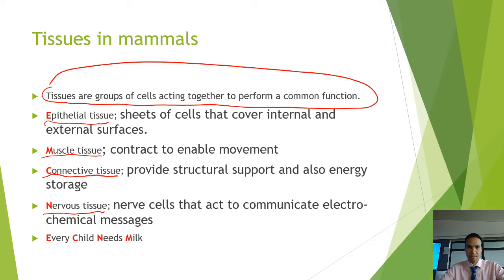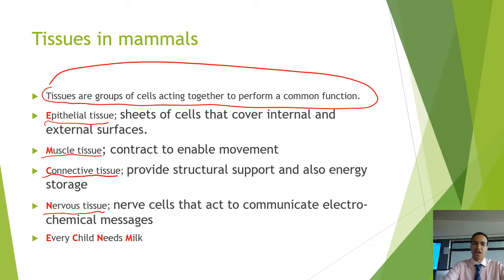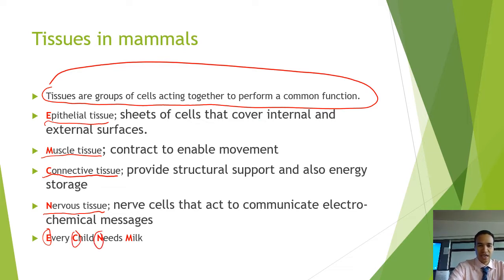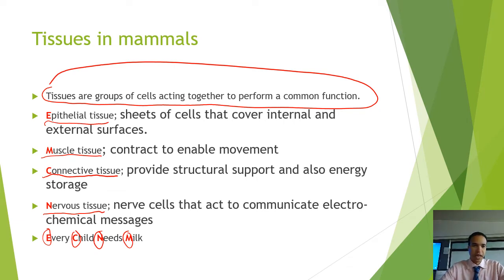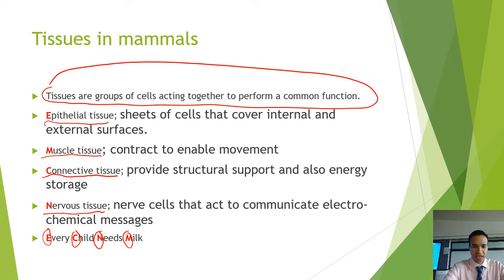A good way to remember these four types of tissues in mammals is to think: 'Every Child Needs Milk.' E for epithelial, C for connective, N for nervous, M for muscle — every child needs milk. And a way to remember that this applies to mammals is that one of the defining features of mammals is that they produce milk.